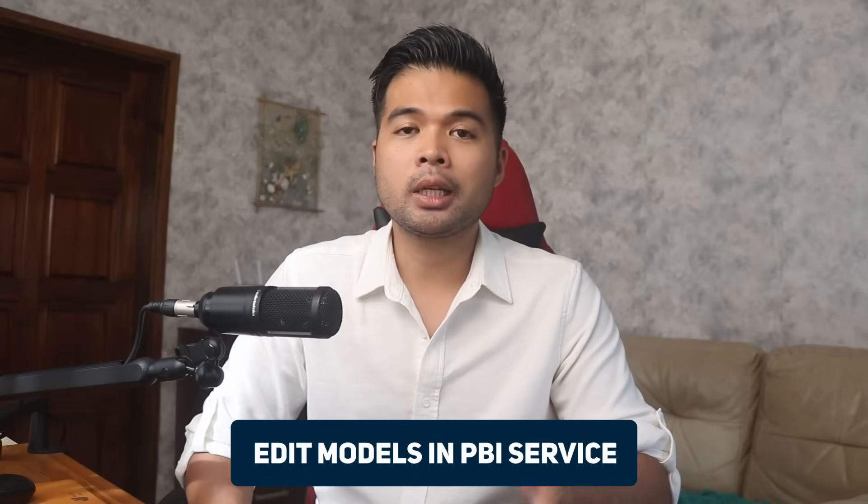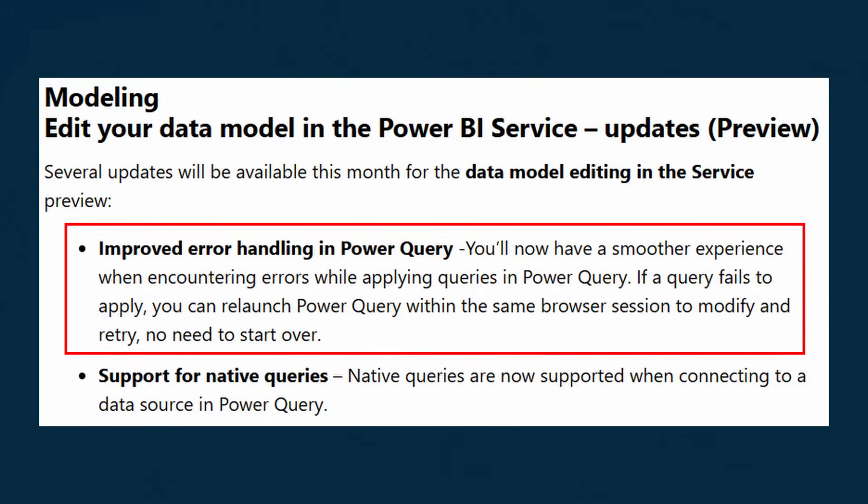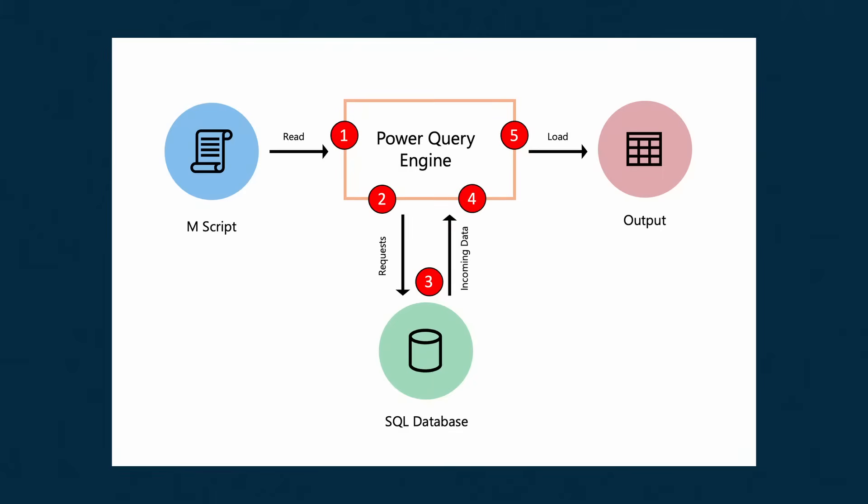The feature that lets you edit your data models in the Power BI service also received a few updates. Error handling has been improved — when your apply queries fail, you can now retry without starting over, which previously meant any changes made before the failure would just disappear. Query folding, also called native queries, is now supported in the edit model experience from the Power BI service. This lets you bundle up your steps as SQL queries so that transformations are done in the source and not in Power BI, saving processing power. If you're interested in query folding and how it can help, go check out my previous video on the topic.